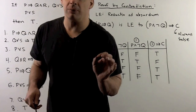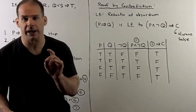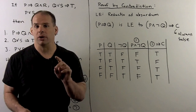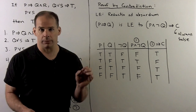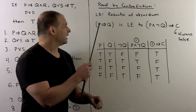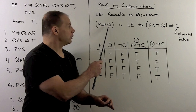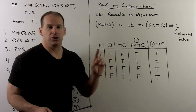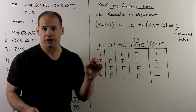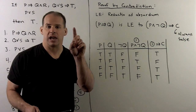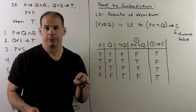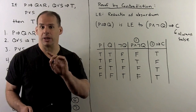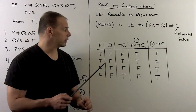Now for a different kind of proof: proof by contradiction. We need to review the logical equivalence of reductio ad absurdum. This says that p implies q is logically equivalent to p and not q implies a contradiction — where contradiction means the statement is always false. Let's check this with a truth table.